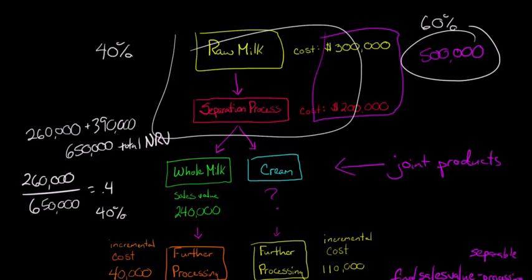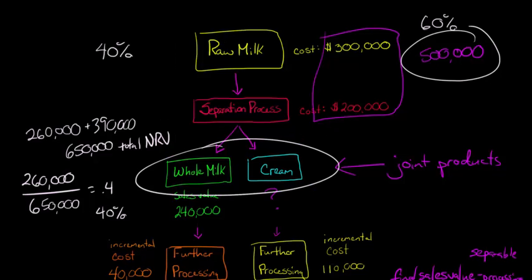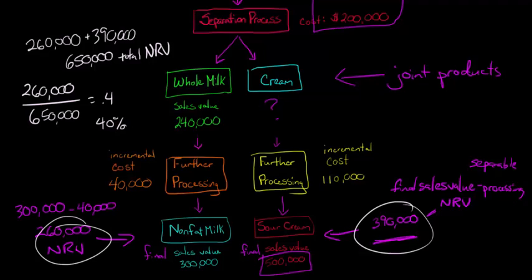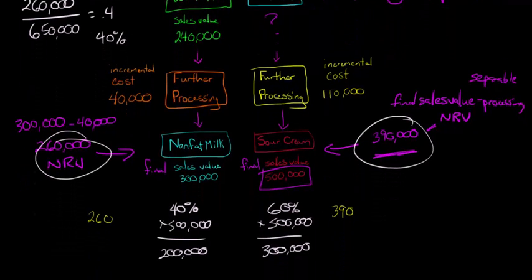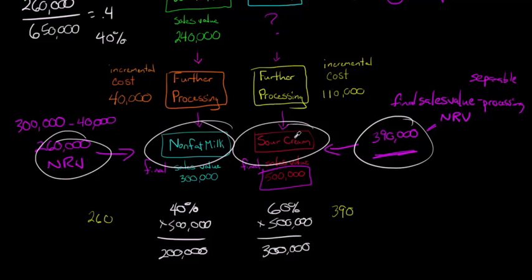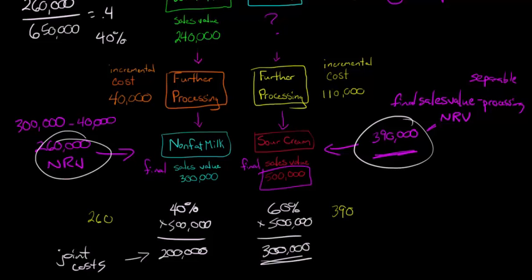These are joint costs that are common to producing both of these products, and we're trying to figure out how to spread them, how to allocate these costs along the nonfat milk division and then also the sour cream. So 40% of those joint costs are going to get applied to the nonfat milk division. So we'd have $200,000 in joint costs for nonfat milk, joint costs allocated.